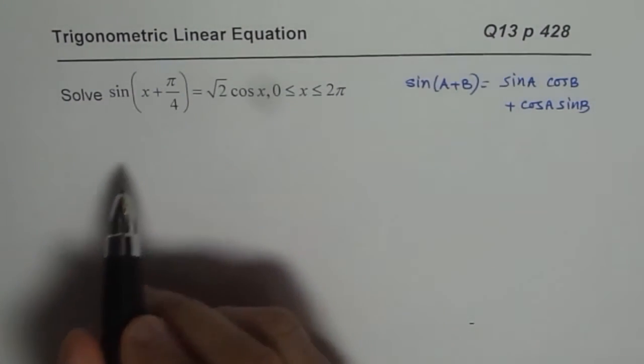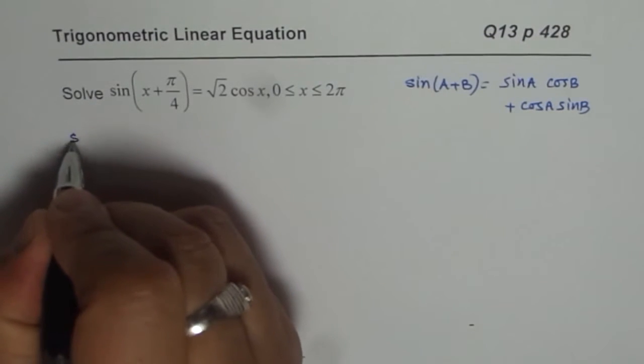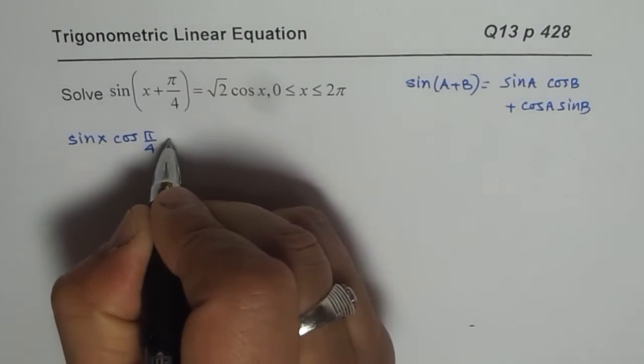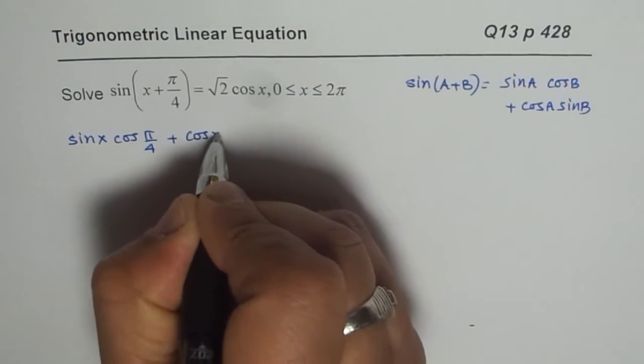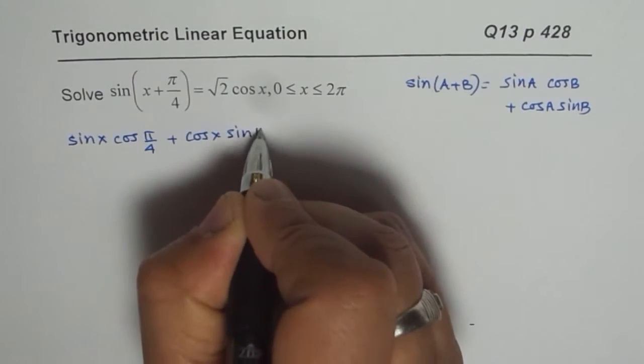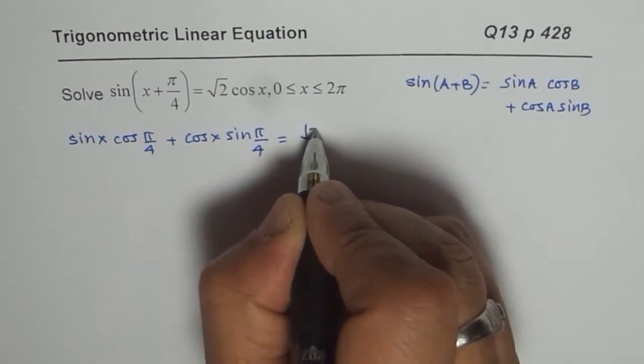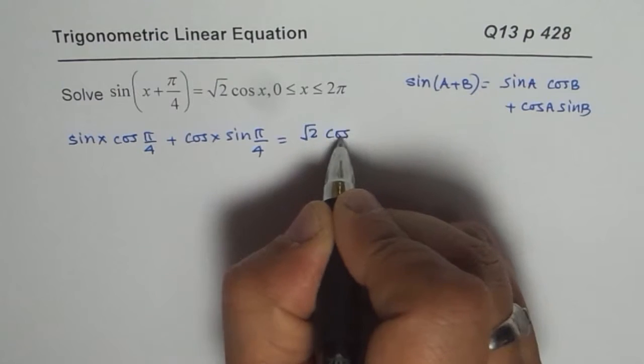sin(x + π/4). So we get sin x cos(π/4) + cos x sin(π/4) on the left side, and on the right side we have √2 cos x.